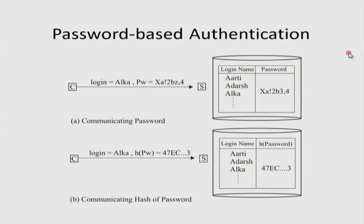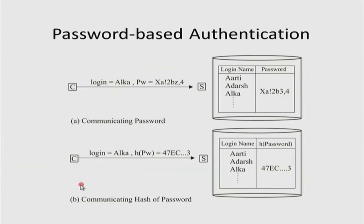I can make the dictionary more user-specific, knowing preferences and family names. Another possibility to avoid this is instead of sending the password on the line, send the hash of the password. But once again there are problems — if I can tap the line and get the hash, I can impersonate the user by setting up a connection to the server and sending that eavesdropped hash. So just sending the hash is also not a very good idea.